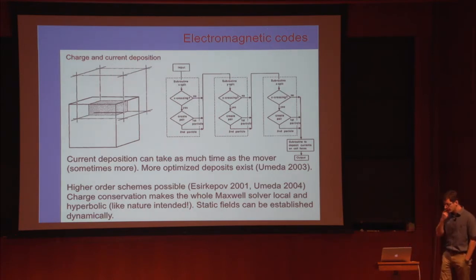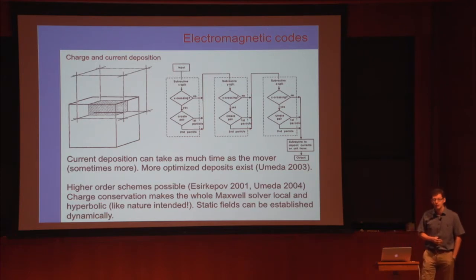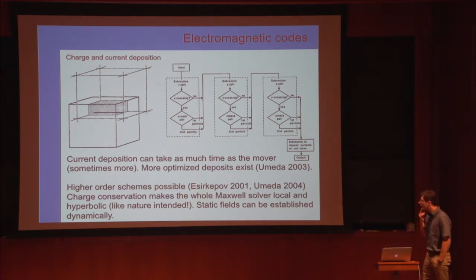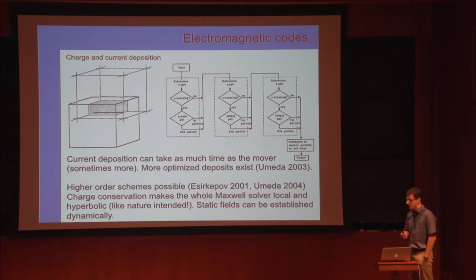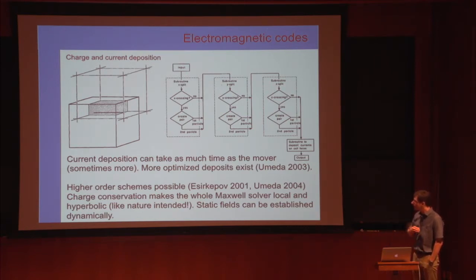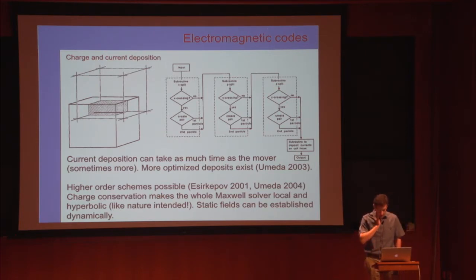In electromagnetic codes, we try not to solve the full Poisson equation, because it's an elliptic equation and doesn't scale well on large computers. Instead, we use charge-conservative current deposition, which satisfies conservation of charge to machine precision. This allows us to evolve only the hyperbolic part of Maxwell's equations without touching the Poisson equation. If the Poisson equation is satisfied initially, it will remain satisfied throughout the evolution.